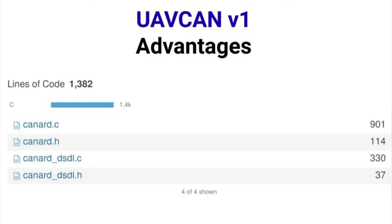Simple implementation: if you take, for example, DDS or RTPS — a very rich and complex protocol — its implementation may take a hundred thousand lines of code, which would be expensive to verify and validate. For comparison, one of the main implementations of UAVCAN, which is libcanard, is only about one thousand lines of code, while offering a comparable degree of abstraction.